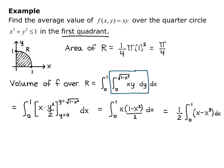If I pull out the one half and distribute the x, I get one half integral from 0 to 1 of x minus x cubed dx. And I integrate, I get one half times x squared over 2 minus x to the fourth over 4 evaluated from 0 to 1, which is one eighth.